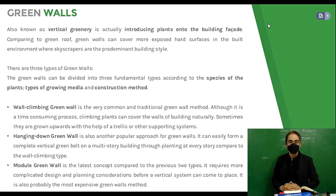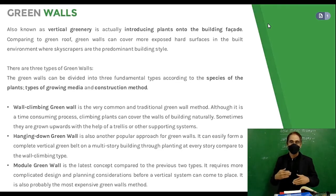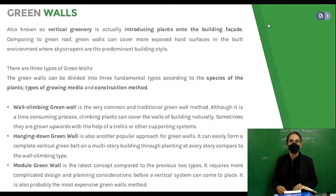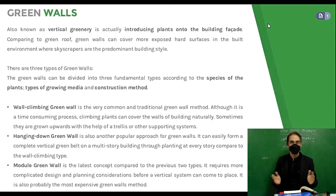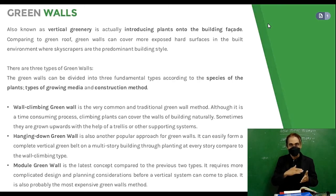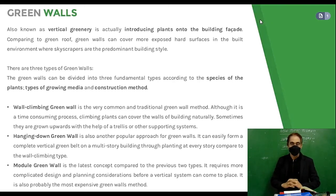Module green wall is the latest concept compared to the previous two types. It requires more complicated design and planning consideration before a vertical system can be put in place, and it is also probably the most expensive type of green wall.